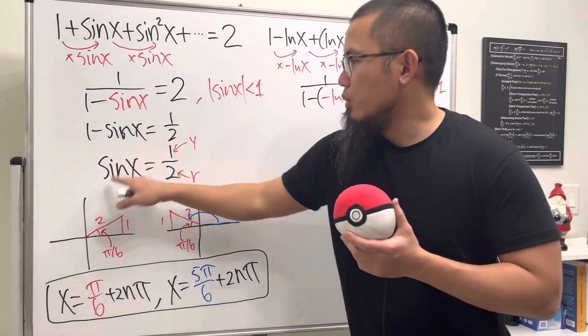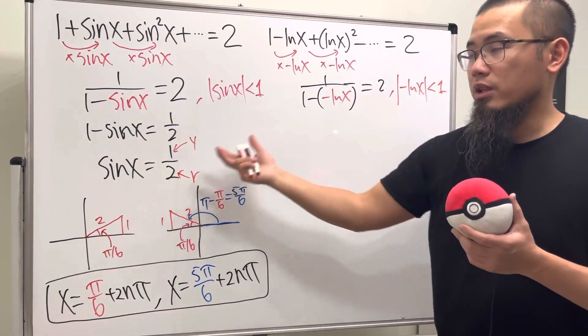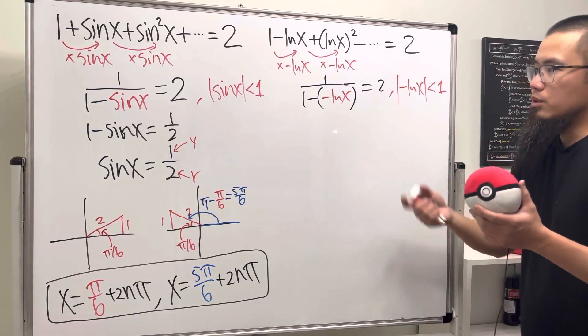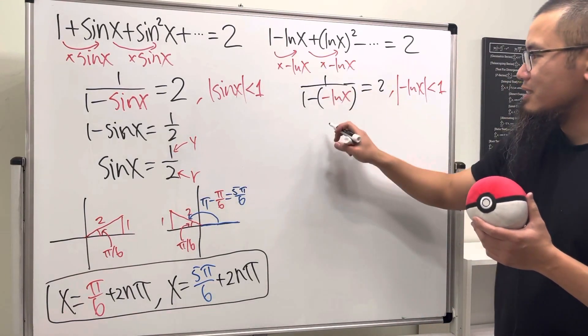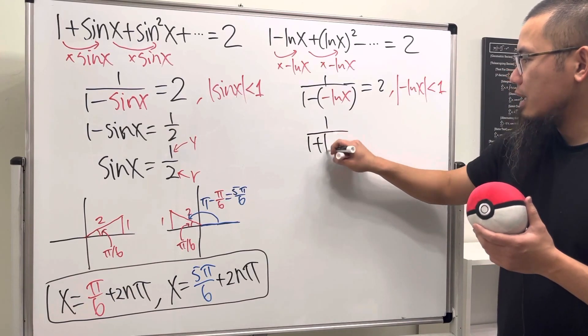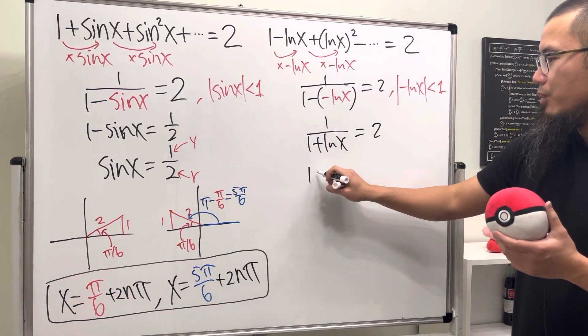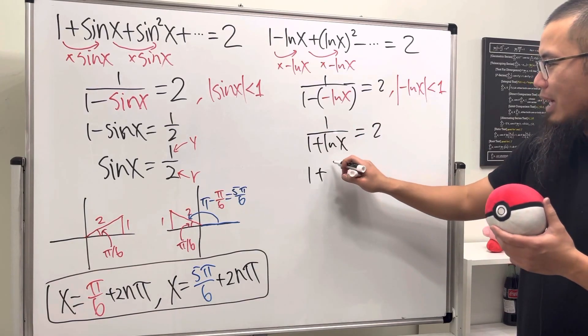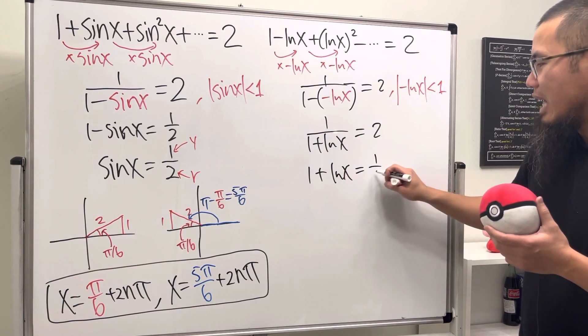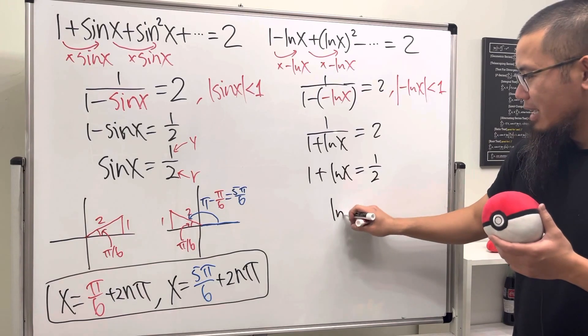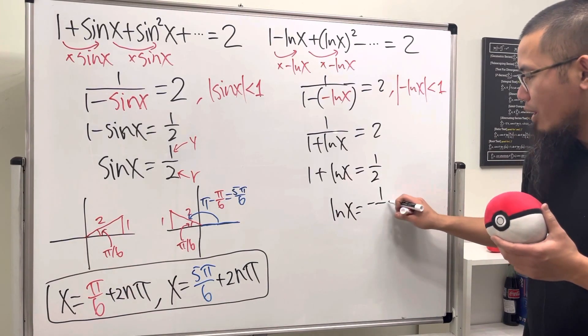Right, earlier this was less than one because this one half of this works, it's going to work again. You see, this is one over one plus ln x, that's equal to two. Do the reciprocal on both sides. One plus ln x is equal to one half. This time, ln x has to be equal to negative one half.